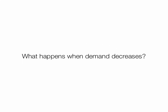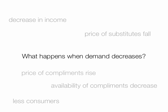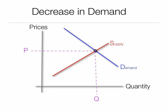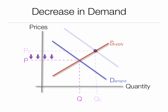What happens when demand decreases? There's been a decrease in the income of consumers, prices of substitutes fall, there are fewer consumers, availability of complements decreases, or the price of complements rises. When demand decreases, the entire curve shifts downward and to the left, and market forces encourage prices to begin to fall.